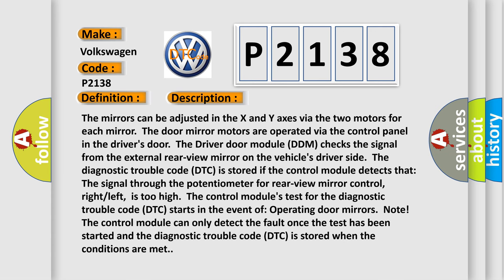The mirrors can be adjusted in the X and Y axes via the two motors for each mirror. The door mirror motors are operated via the control panel in the driver's door. The driver door module (DDM) checks the signal from the external rear view mirror on the vehicle's driver side.